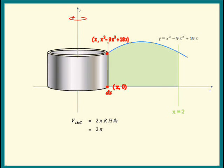The radius is x. The height is the big y-coordinate. And the thickness is dx. The total volume is the sum of all these. And the vertical slices start when x is zero and stop when x is two.